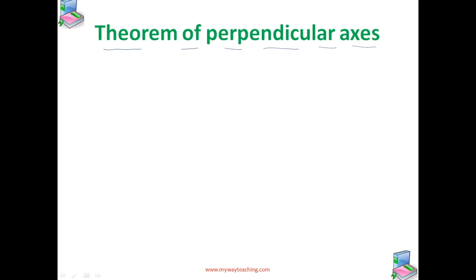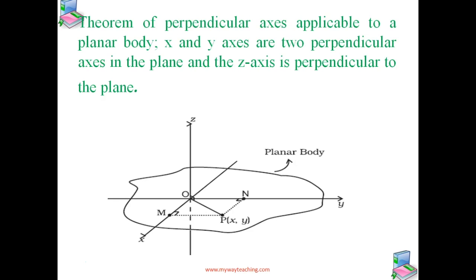You can see this figure — it illustrates this theorem. The theorem of perpendicular axis states that the moment of inertia of a planar body, which we can call a lamina, about an axis perpendicular to its plane is equal to the sum of its moment of inertia about two perpendicular axes concurrent with that perpendicular axis and lying in the plane of the body.